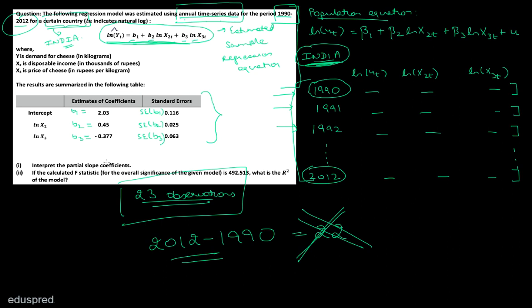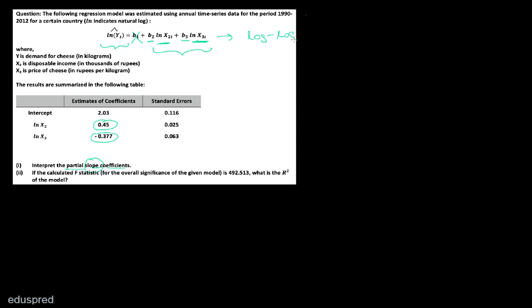In part one, we have to interpret the partial slope coefficients. We are working with a multiple linear regression model because we have two independent variables on the right-hand side — that is why the word 'partial' is used. The slope coefficients are B2 and B3; B1 is not a slope coefficient. In this functional form, we have logs on both sides, making this a log-log model.